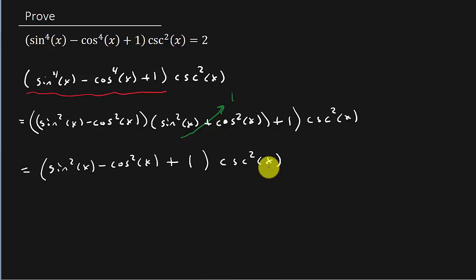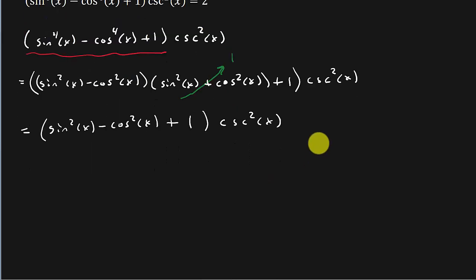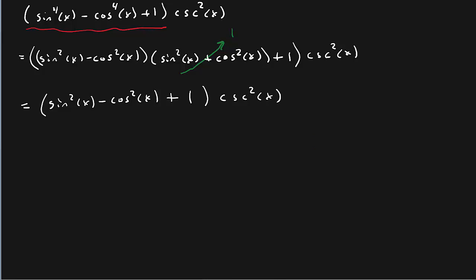If I got cosecant squared, I know sine squared times cosecant squared would be 1. So let's do that, let's see what happens there.